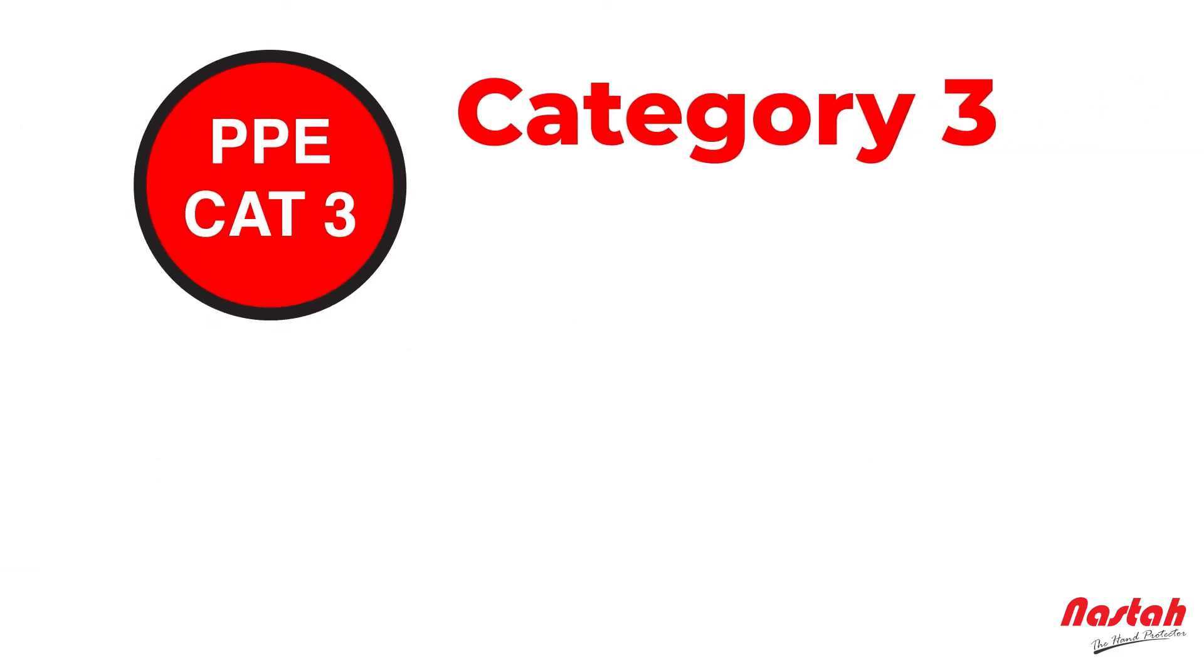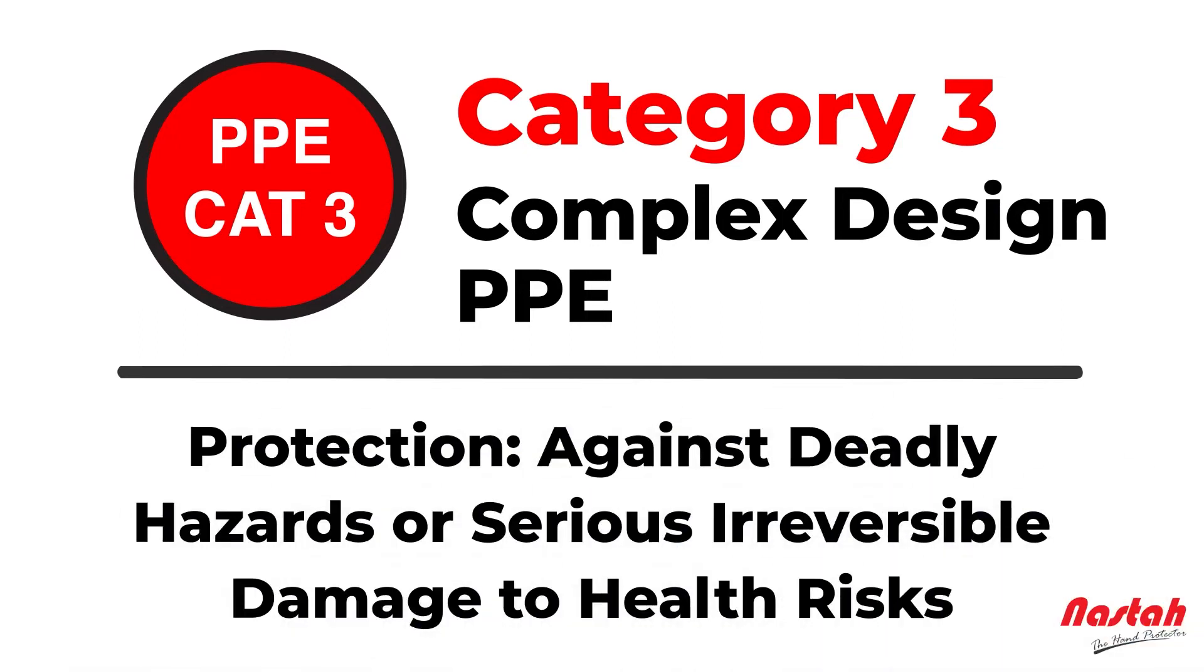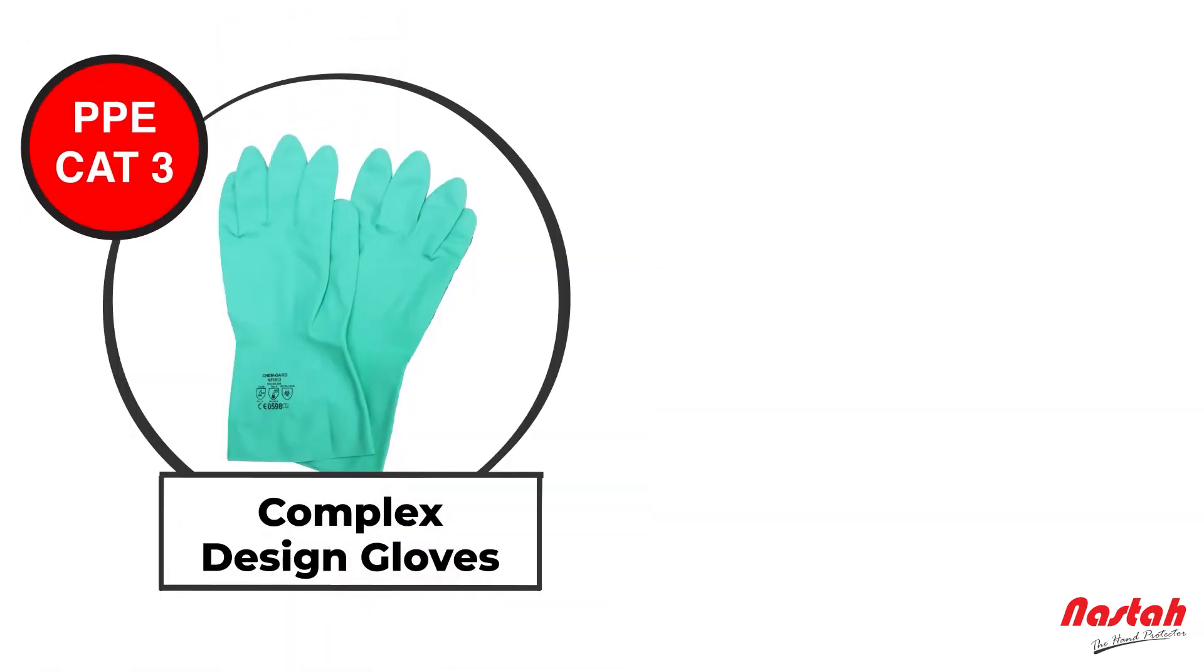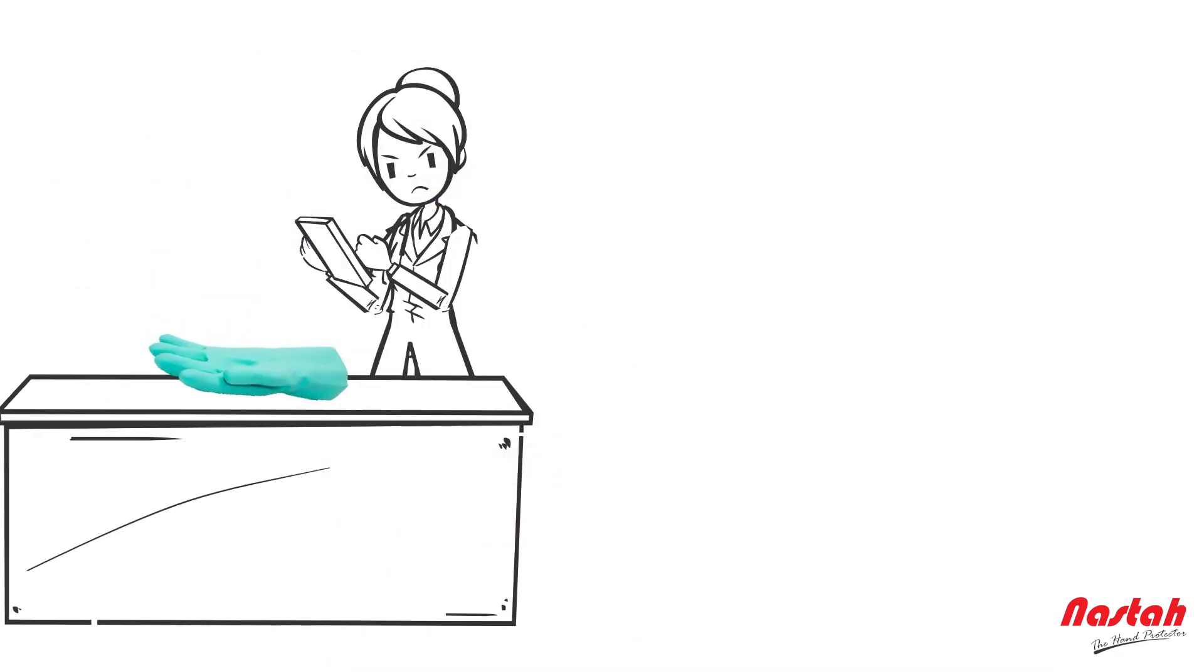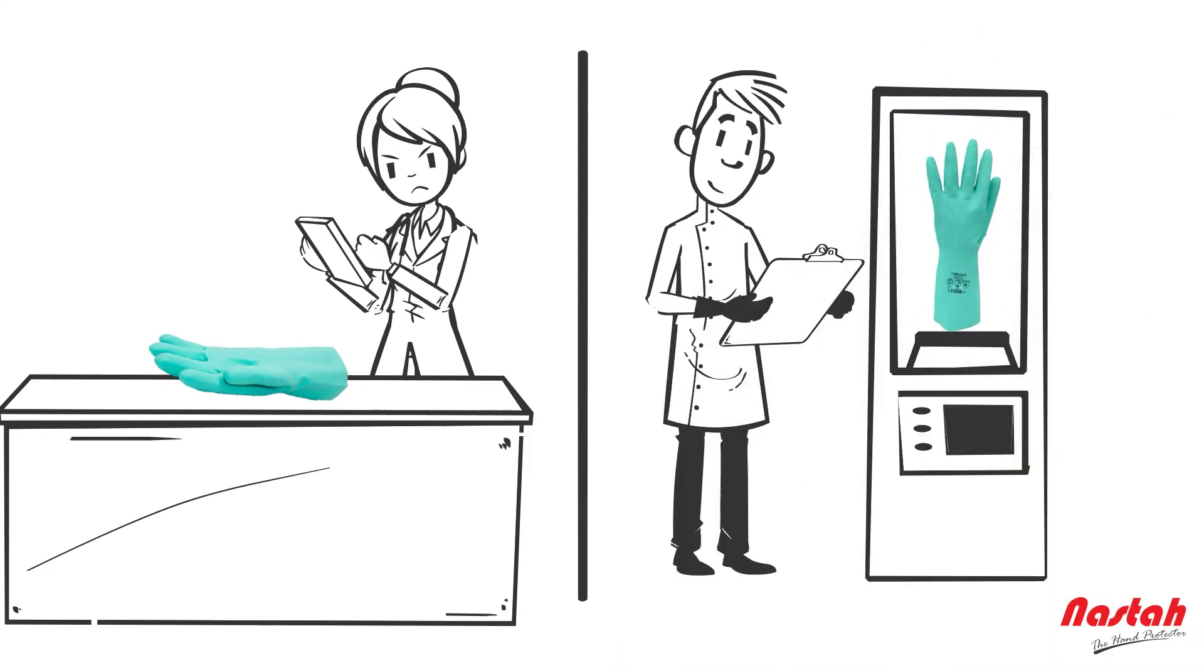Category 3 – Complex Design PPE – Protection Against Deadly Hazards or Serious Irreversible Damage to Health Risks. Complex design gloves cover the highest level of risk, otherwise defined as irreversible and mortal risk. This PPE must not only pass the test of the second category but also be subjected to a product quality assurance system.